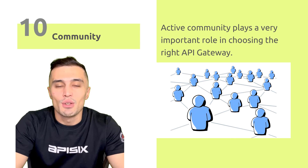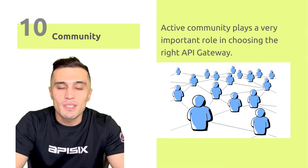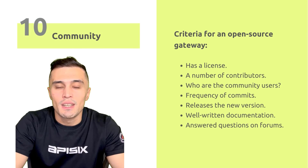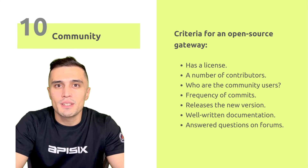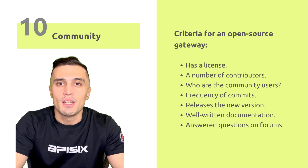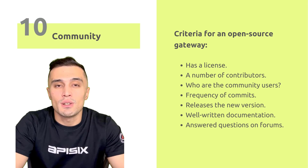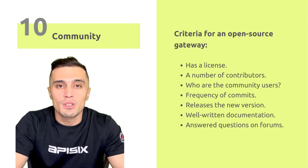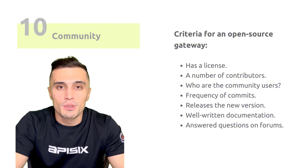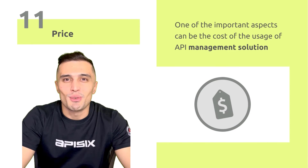Number ten is community. If the API Gateway is open source, carefully analyze whether it has a license file, an active community, and check the number of recent contributors. Look at who the community users are, how often people make commits, how frequently new versions are released, and whether the documentation is well written and answers questions on public forums.